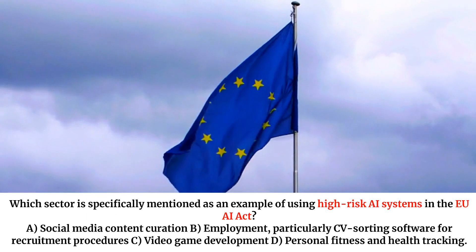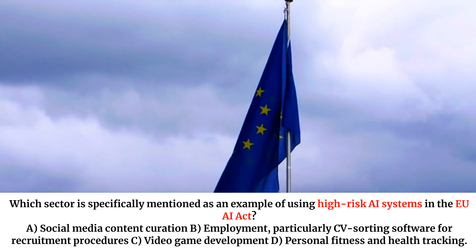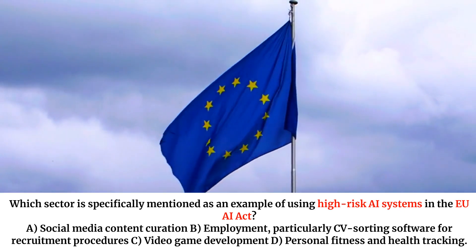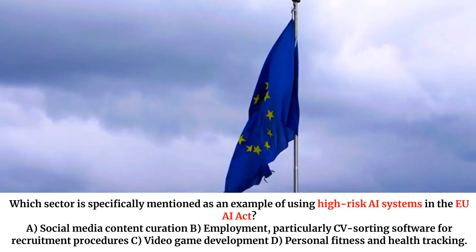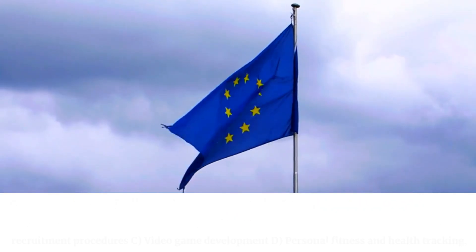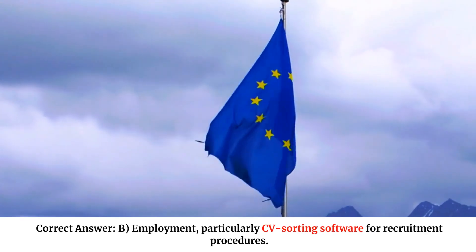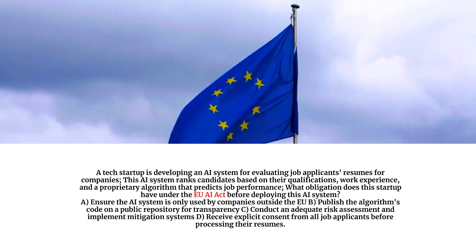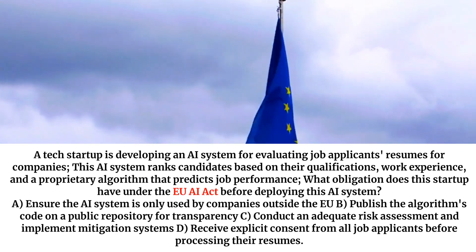Which sector is specifically mentioned as an example of using high-risk AI systems in the EU AI Act? A. Social media content curation. B. Employment, particularly CV-sorting software for recruitment procedures. C. Video game development. D. Personal fitness and health tracking. Correct answer: B. Employment, particularly CV-sorting software for recruitment procedures.